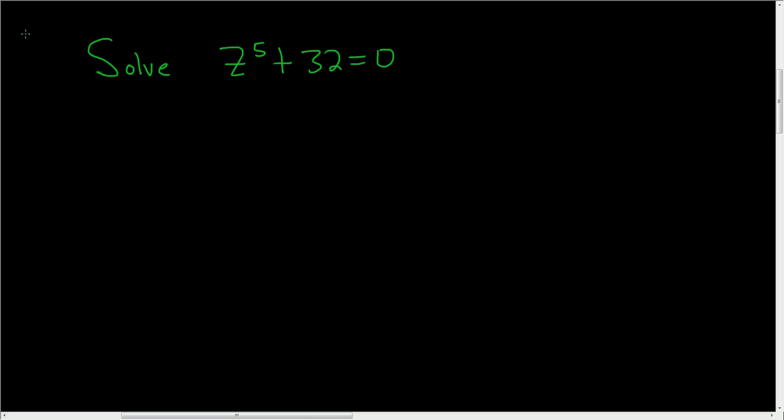Solve z to the fifth plus 32 equals zero. We're going to do this the fastest way possible.